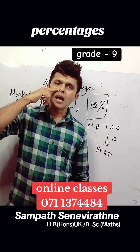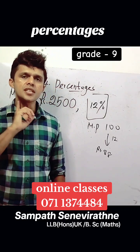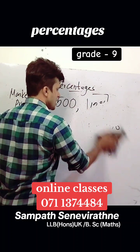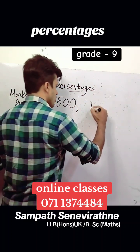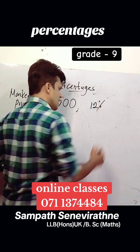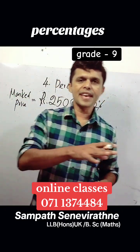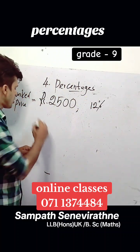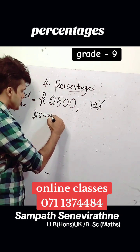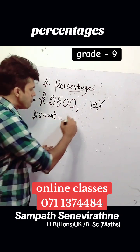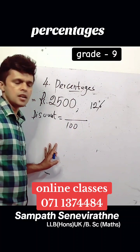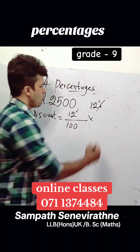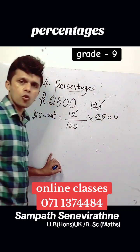The given discount by the merchant is 12%. There are two questions. The first question: we could calculate the discount given by the merchant. For every 100 rupees, he gives a discount of 12 rupees. So the discount given for 2500 rupees can be calculated.